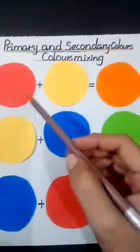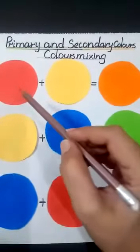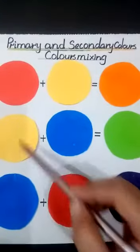There are three types of primary colors. Red, yellow, blue.